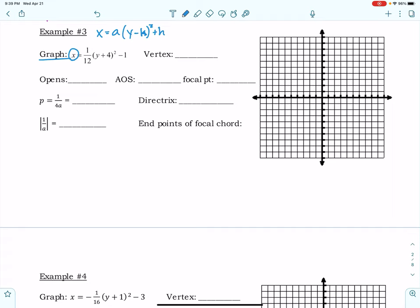We need to recognize that because the 1/12 is positive, this is going to open to the right. So we'll have an axis of symmetry that's going to be a horizontal line this time.